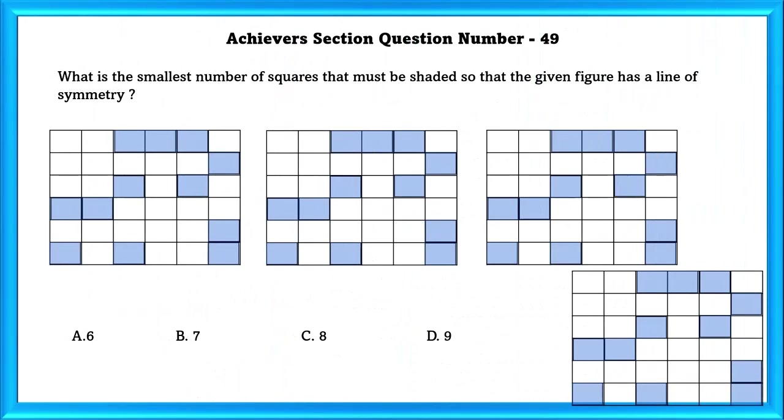Achievers Section Question Number 49: What is the smallest number of squares that must be shaded so that the given figure has a line of symmetry? The first one, this part is symmetrical. If we shade 1, this part will be symmetrical.